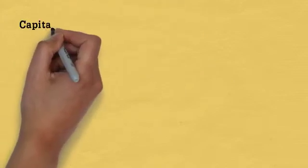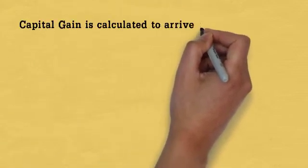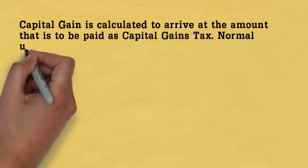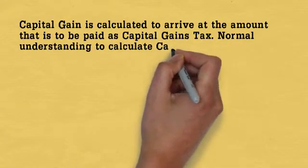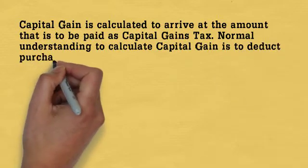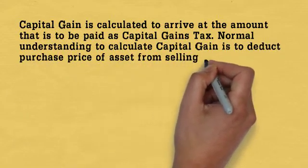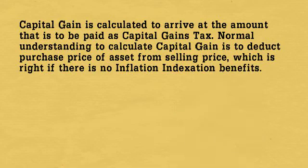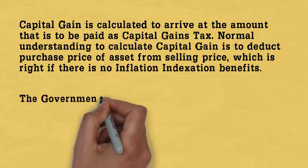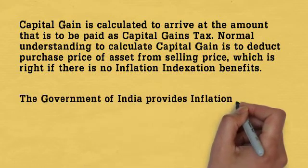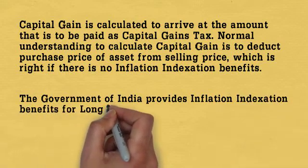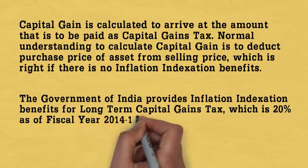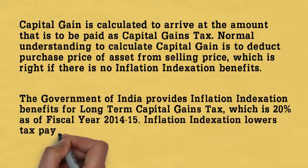Capital gain is calculated to arrive at the amount to be paid as capital gain tax. The normal way to calculate capital gain is to deduct the purchase price of an asset from the selling price, which is correct if there is no inflation indexation benefit. The Government of India provides inflation indexation benefit for long-term capital gain tax, which is 20% as of fiscal year 2014 and 2015.